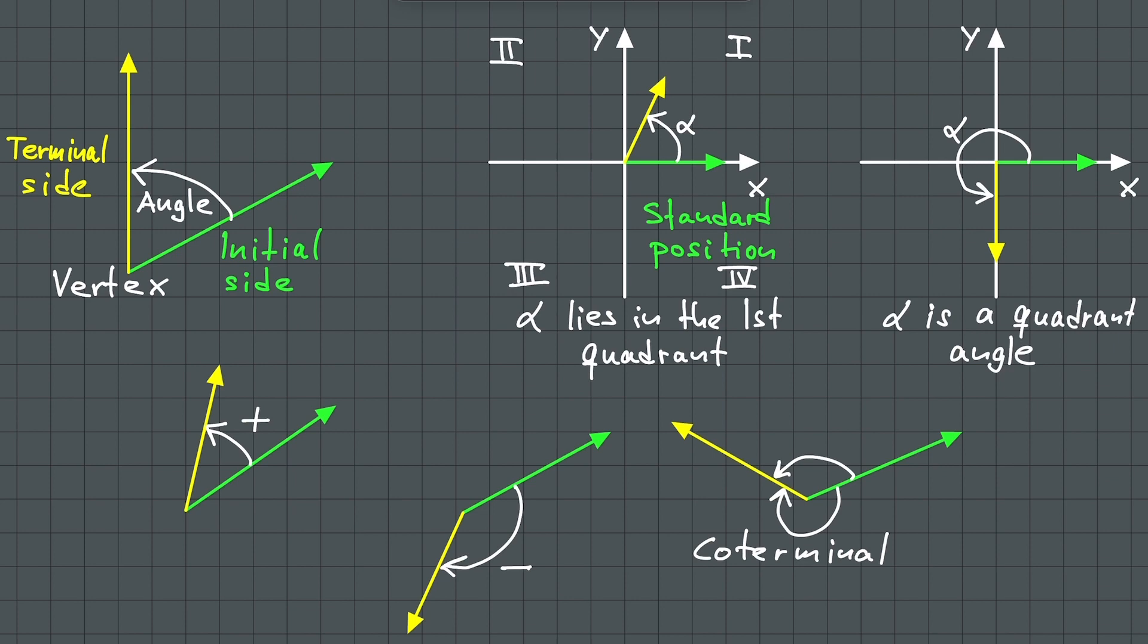Lowercase Greek letters such as alpha, beta, gamma, and theta, as well as uppercase letters A, B and C will often be used to denote angles.